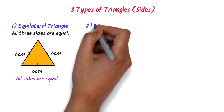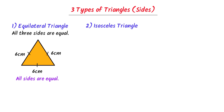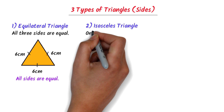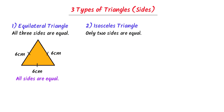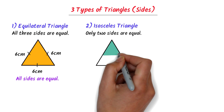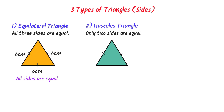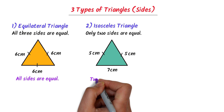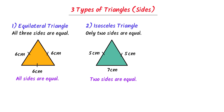The second type of triangle is the isosceles triangle. In an isosceles triangle, only two sides are equal. That's why we put a single dash on two sides and leave the third side. For example, in this triangle, this side is 5cm, this side is also 5cm, and this side is 7cm. Only two sides are equal, so we call it an isosceles triangle.